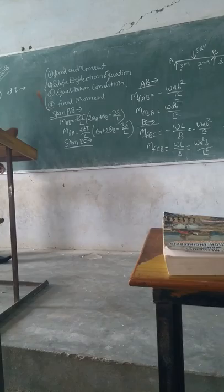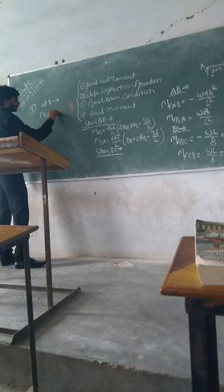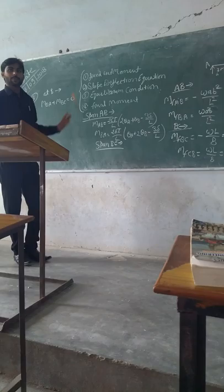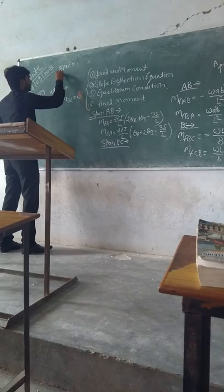So, M, B, A plus M, B, C is equal to 0. Why is it? You have three conditions: submission, submission, submission B.